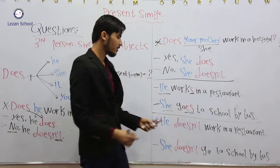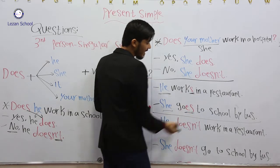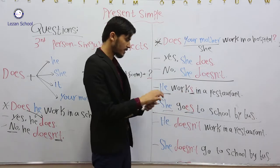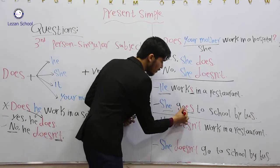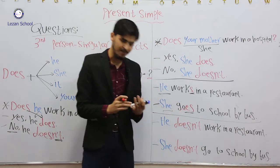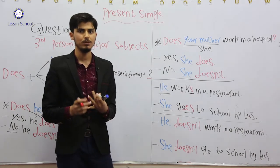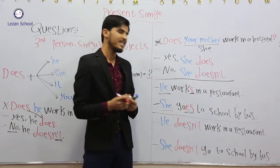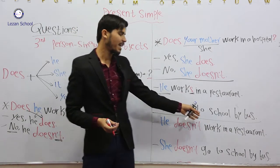She goes. Why here do we add ES? Because the verb 'go' ends with an O sound. We've studied that if the verb ends with SH sound, S, or Z, we add ES. For example...